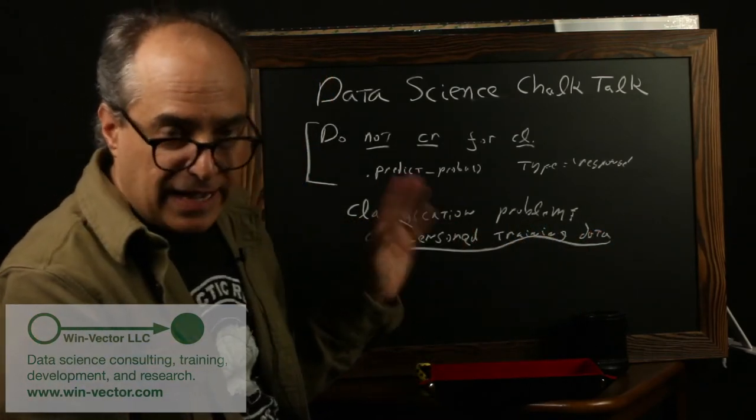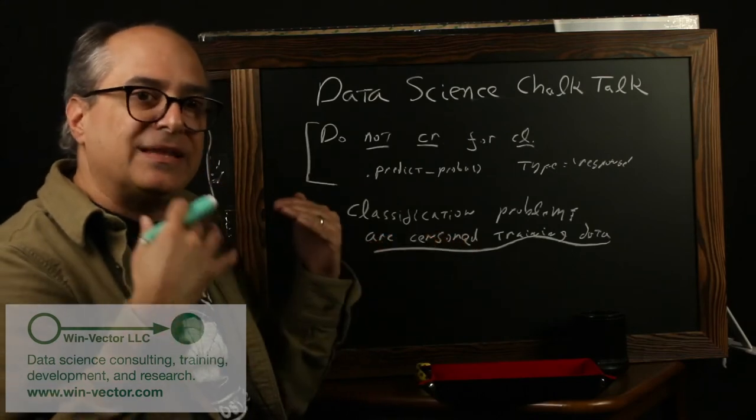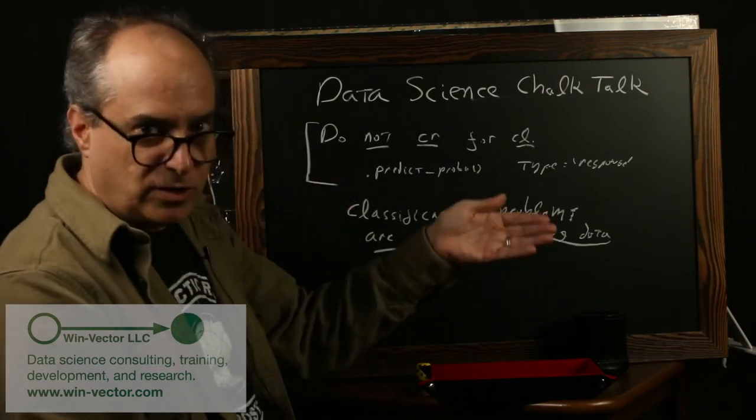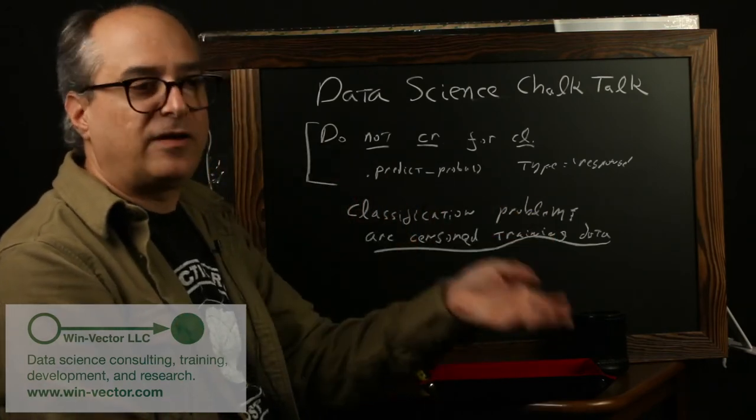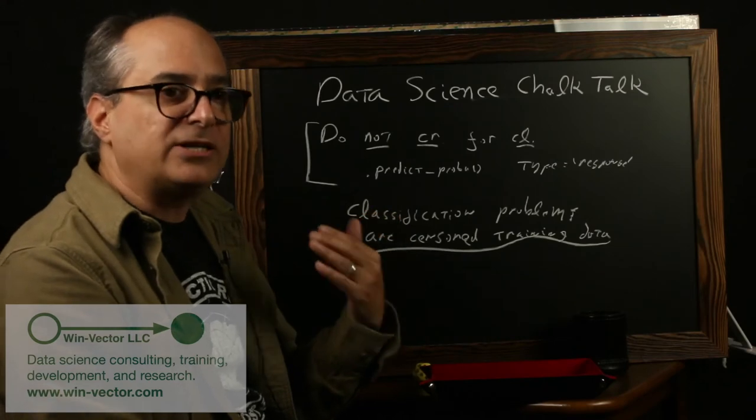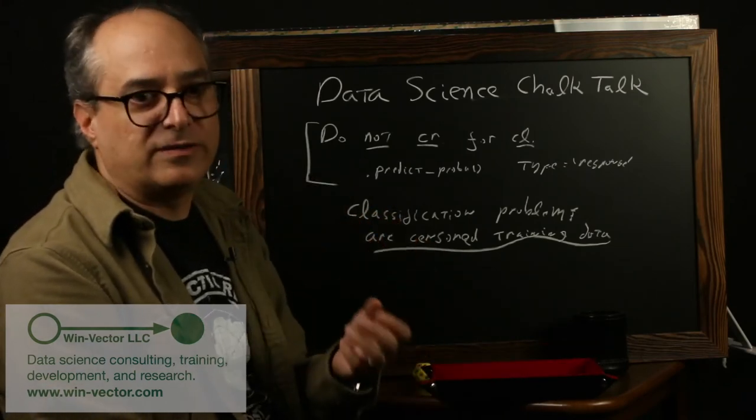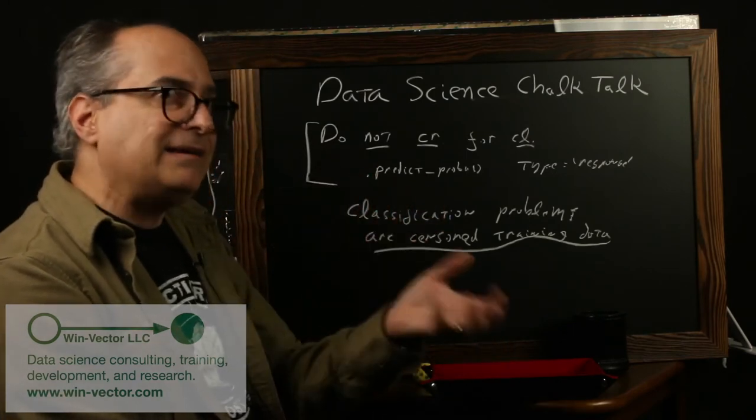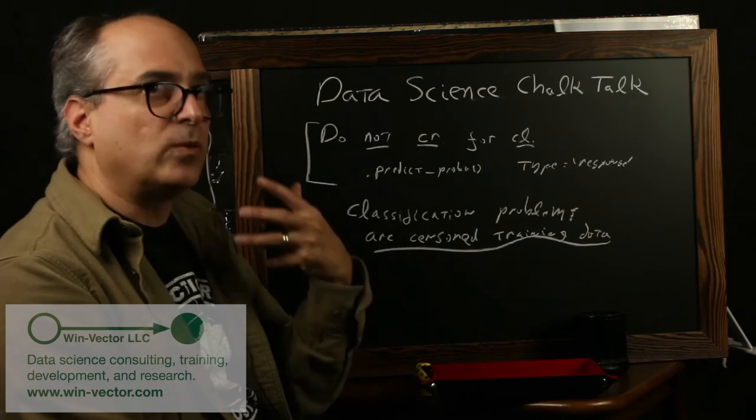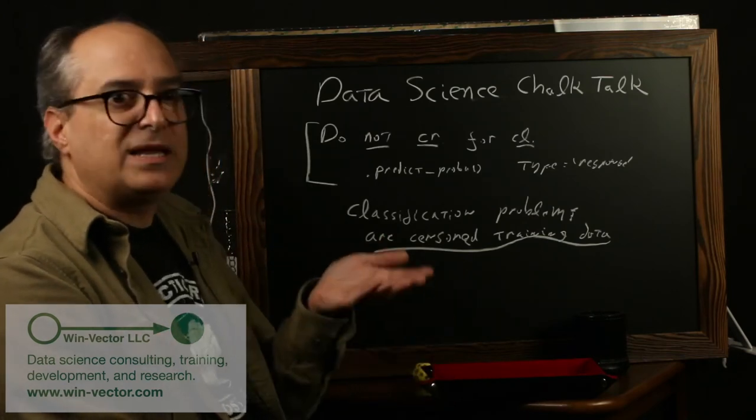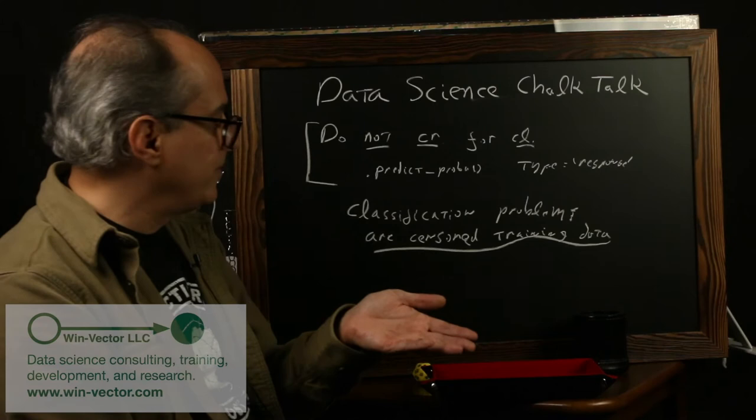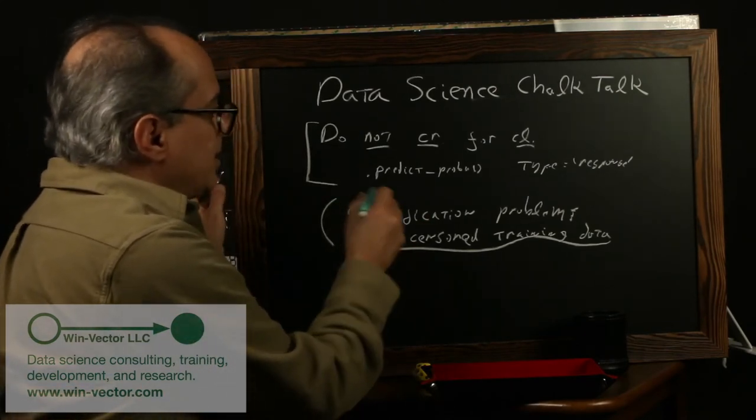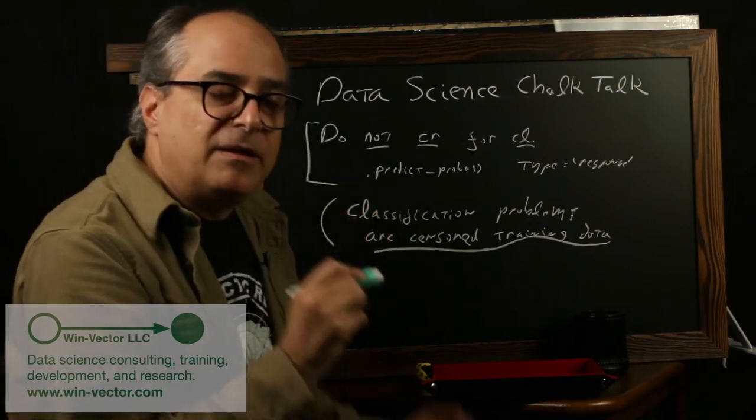One can imagine an ideal world where in the classification problem training data, for each row, you're not given whether it was in the true or false class, say true being they clicked on the ad, false being they didn't click on the ad, but you're actually given the actual probability of each one of those events, that this person had a 5% chance of clicking, this person had a 2% chance of clicking. That data, which is not available, but if it were available, would be much more valuable. Though sometimes we get it by aggregating on a few variables.